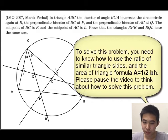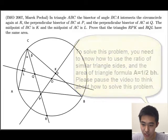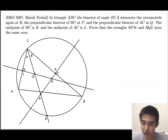This is number 4 from the 2007 International Math Olympiad. In triangle ABC, the bisector of angle BCA intersects the circumcircle again at R, the perpendicular bisector of BC at P, and the perpendicular bisector of AC at Q. The midpoint of BC is K, and the midpoint of AC is L. Prove that the triangles RPK and RQL have the same area.